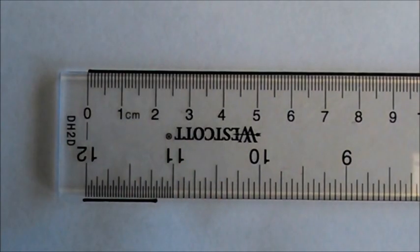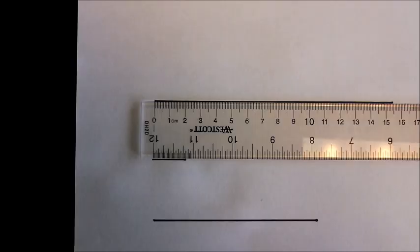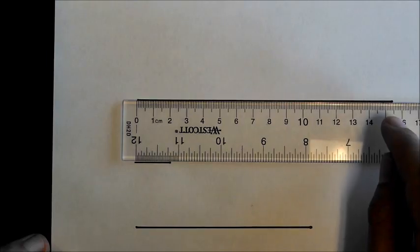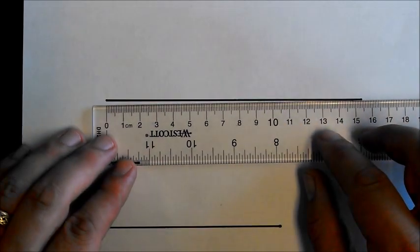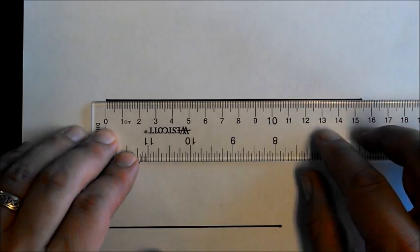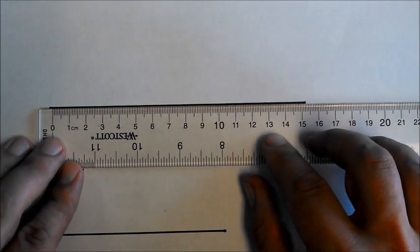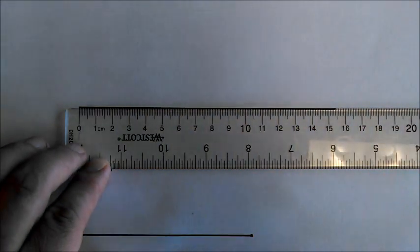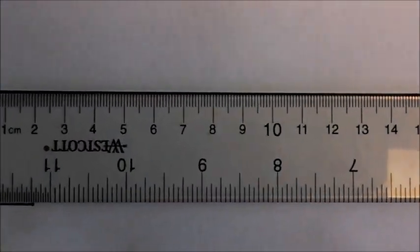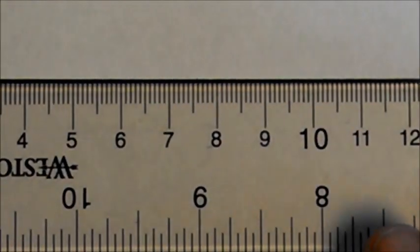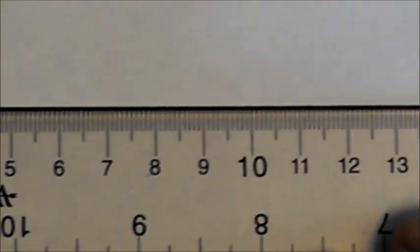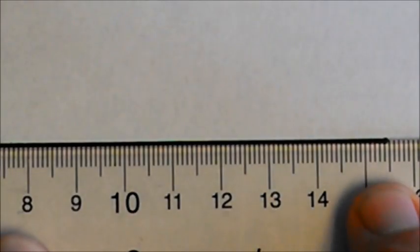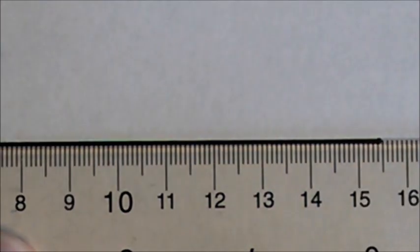So if we go across, we can see that this goes all the way up past 15 centimeters. So we keep this on here, we're going to look down there, and we're going to see where that line ends. So we move it in, and we look. It's right here on the end. It's between the 15 and the 16.